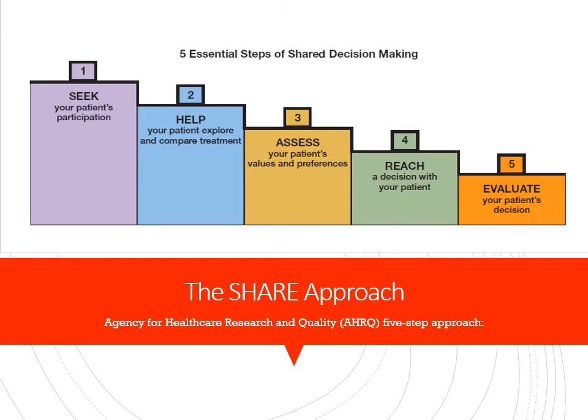Third, assess our patient's values and preferences. If a patient doesn't value their own care — like many moms who don't prioritize themselves over their kids — it might not be that they don't understand, it might be that something else is more important to them. Fourth, reach a decision with your patient — both of you make the plan based on that decision. And fifth, evaluate your patient's decision. If they say they absolutely don't want to quit smoking, why don't they? Is it the feeling, a social dynamic? What is it about smoking?